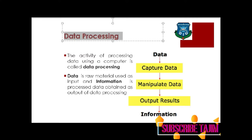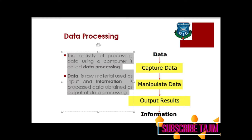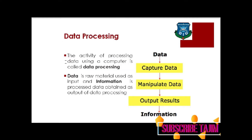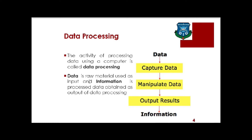The activity of processing data using a computer is called data processing. Data is raw material used as input, and information is processed data obtained as output of data processing.